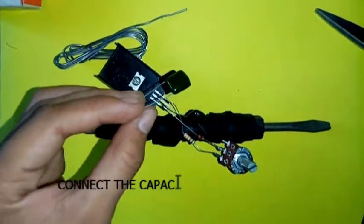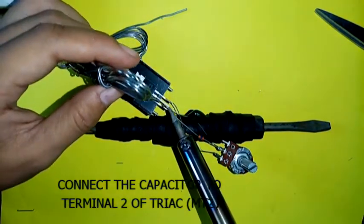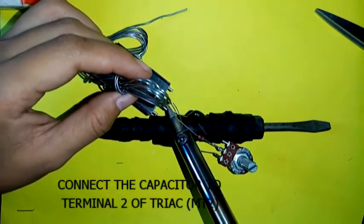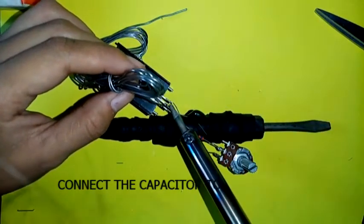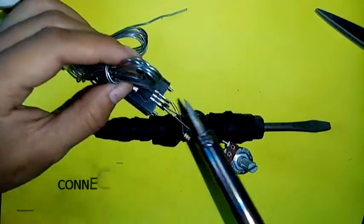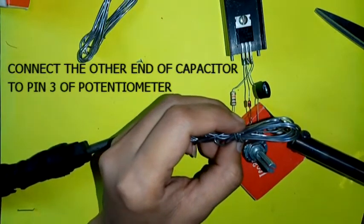Connect the capacitor to Terminal 2 of the triac or MT2. Connect the other end of the capacitor to pin 3 of the potentiometer.